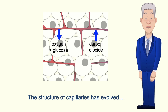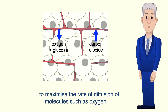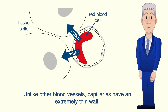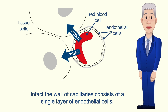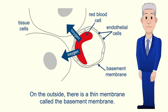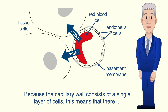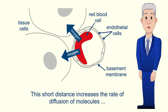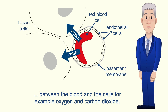The structure of capillaries has evolved to maximize the rate of diffusion of molecules such as oxygen. Here is a close-up of a capillary and the surrounding body cells. Unlike other blood vessels, capillaries have an extremely thin wall — in fact, the wall consists of a single layer of endothelial cells. On the outside there's a thin membrane called the basement membrane. Because the capillary wall consists of a single layer of cells, there is a very short diffusion distance between the blood and the cells near the capillary, and this short distance increases the rate of diffusion of molecules such as oxygen and carbon dioxide.